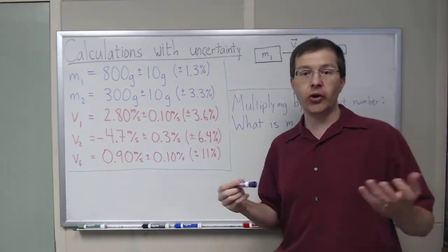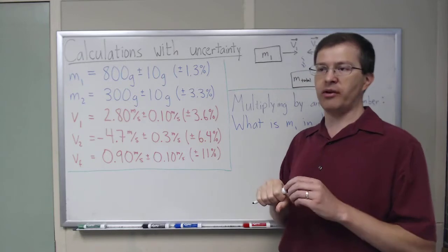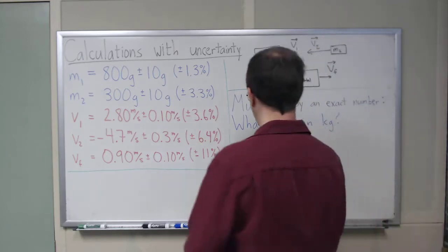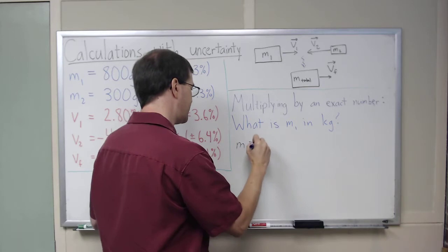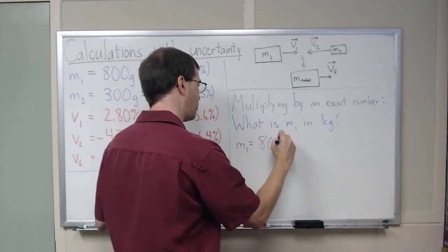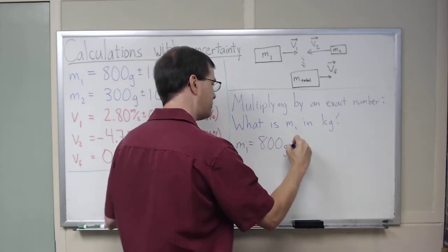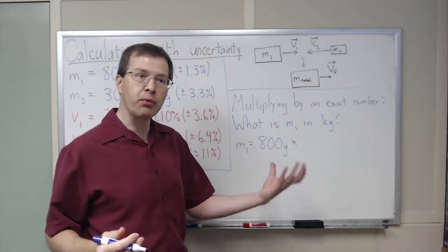And to do that, just to show you how that would look, if we didn't worry about the uncertainty, what we would do, we would say that M1 is equal to 800 grams times, when we convert units, you multiply by a ratio,